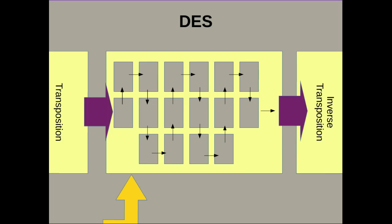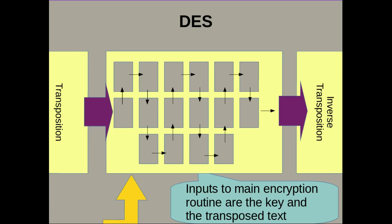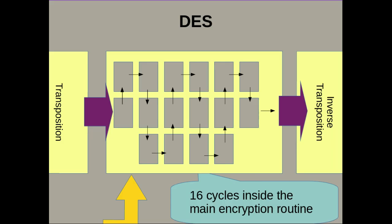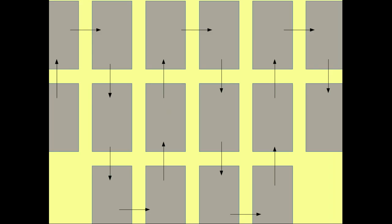We're going to zoom in now to the actual internals, and in the internals what we've got are 16 boxes. These 16 boxes are called cycles and the inputs to these are the key and the transposed text. As I mentioned, 56 bits for the key, 64 bits for the transposed text. And there are 16 cycles inside this main encryption routine. I've drawn them as a kind of snake just so they fit in a box. They're just one after the other.